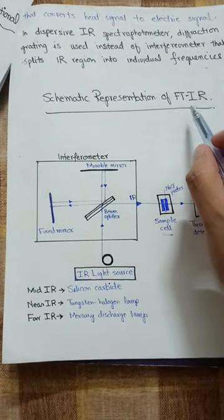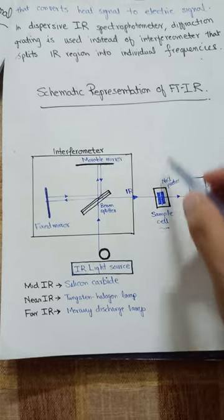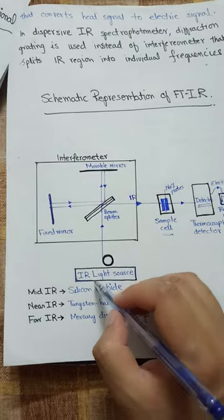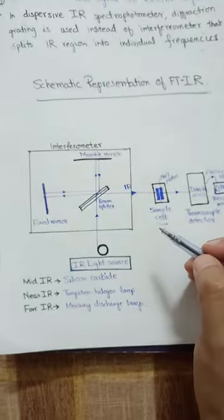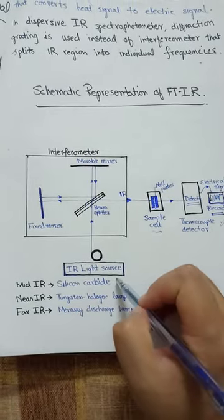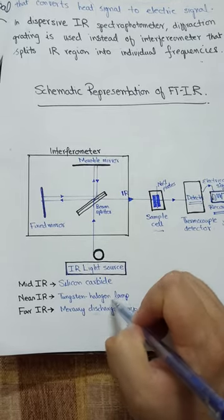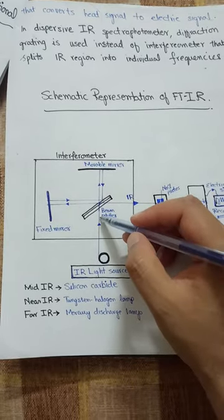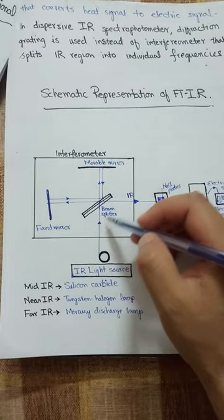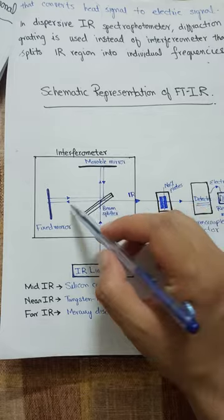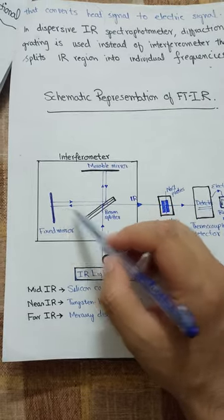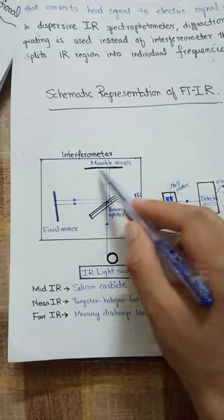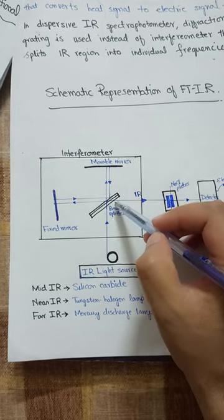Here we have a schematic representation of the Fourier transform infrared spectrophotometer. First is the light source in the infrared region — silicon carbide for mid-IR, tungsten halogen lamp for near-IR, and mercury discharge lamp for far-IR. These IR radiations pass through the interferometer, where the beam splitter splits the beam into two equal paths: one is reflected onto the fixed mirror.